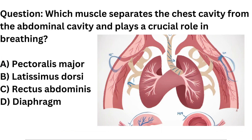Question. Which muscle separates the chest cavity from the abdominal cavity and plays a crucial role in breathing? A. Pectoralis major. B. Latissimus dorsi. C. Rectus abdominis. D. Diaphragm.